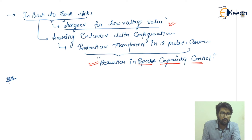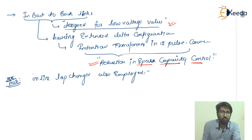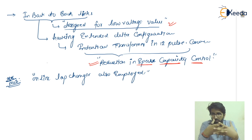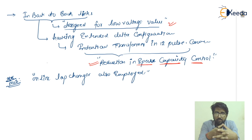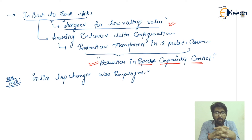An important point to note: online tap changers are also employed for efficient transforming from low to high or high to low voltage values. Tap changers may be of different types depending on the requirement of conversion of voltage or current values. Tap changers actually have a sliding contact system so that different voltage levels can be achieved as per our requirement. I hope you have understood up to this point, and thank you.